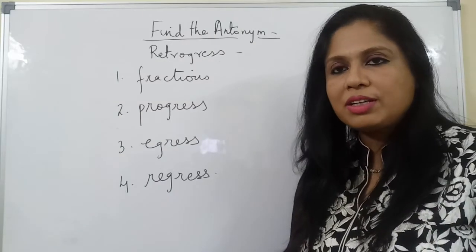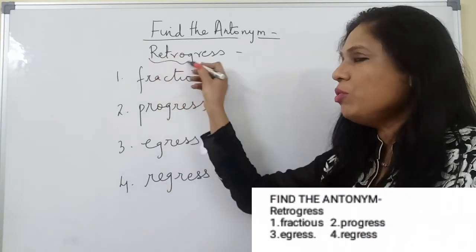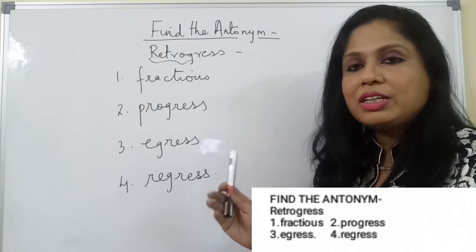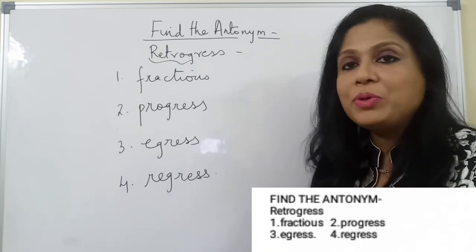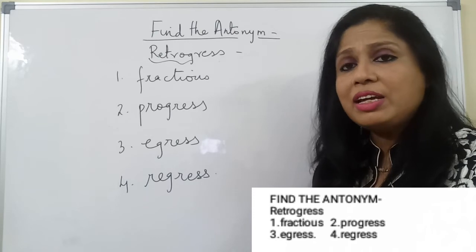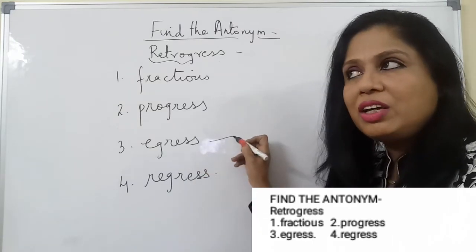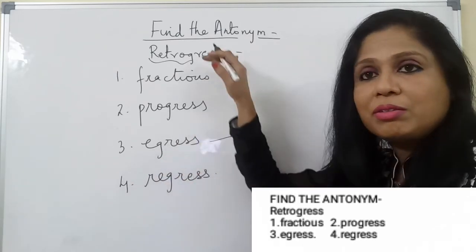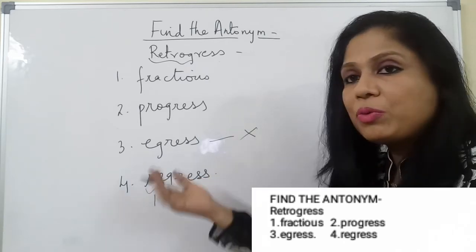Now, question and answer time. Find the antonym of the word 'retrogress'. The word 'retro' means back, so to go back or backwards is the meaning of this word. It can mean to go back physically — as in 'the army retrogressed' — or to go back in one's memories, which is also an act of retrogression. I'll first try to eliminate words that look familiar. 'Egress' cannot be my answer because it means an exit point; it doesn't mean the opposite of retrogress. 'Regress' — 're' also means back or backwards, so to regress is also to go back. It is a synonym, so it cannot be my answer.